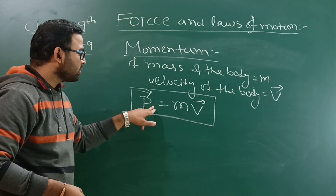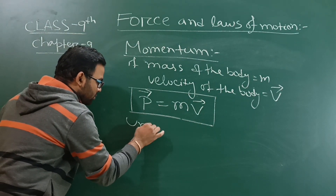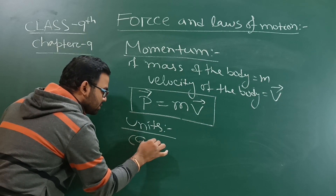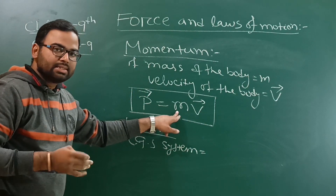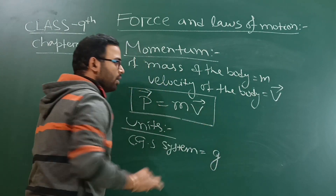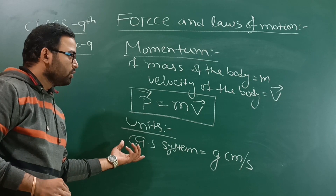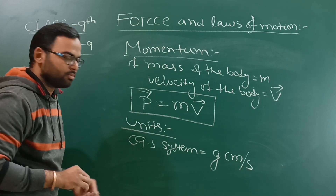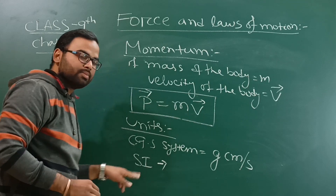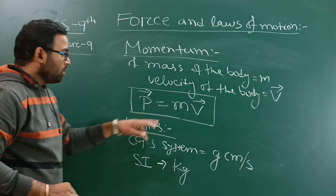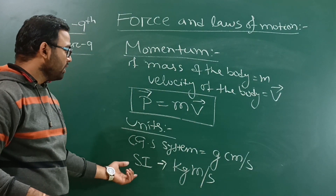What are the units of momentum? In the CGS system, mass is in grams and velocity is in centimeters per second, so the CGS unit of momentum is gram-centimeter per second. In the SI system, mass is in kilograms and velocity is in meters per second, so the SI unit of momentum is kilogram-meter per second (kg·m/s).